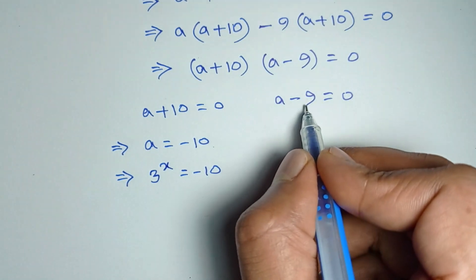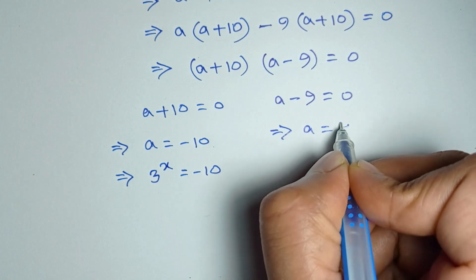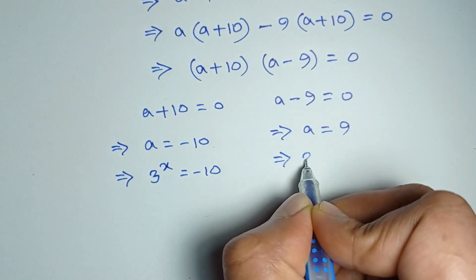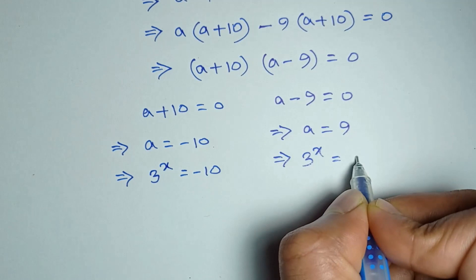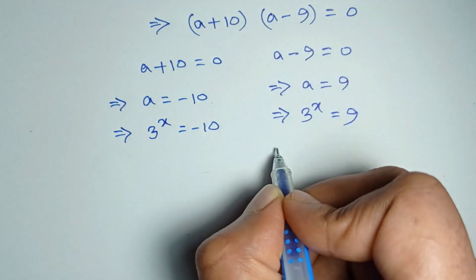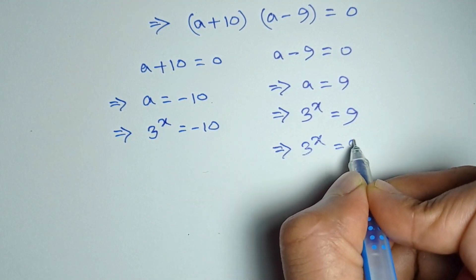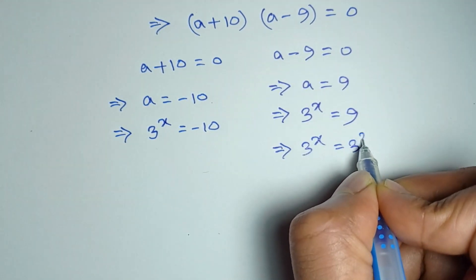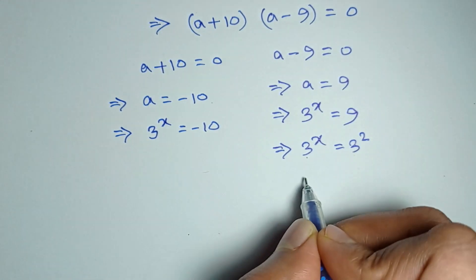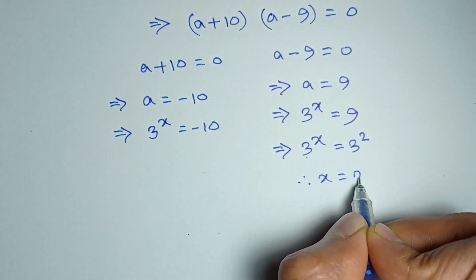Again, a minus 9 is equal to 0, or a is equal to 9. Putting the value of a, 3 to the power x is equal to 9. Or, 3 to the power x is equal to 3 squared. Here, the bases are the same, so the powers are equal, then x is equal to 2.